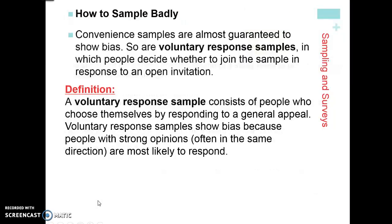This would lead to an overestimate of the actual population proportion. Convenient sampling is not a great way to sample. Convenient samples are almost guaranteed to show some sort of bias — either overestimate or underestimate — because they are easy samples to take.